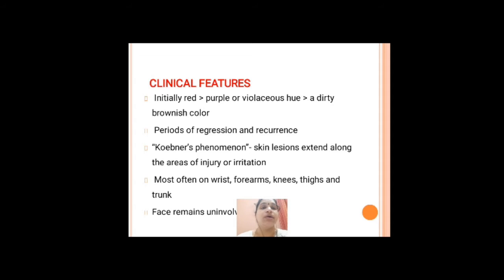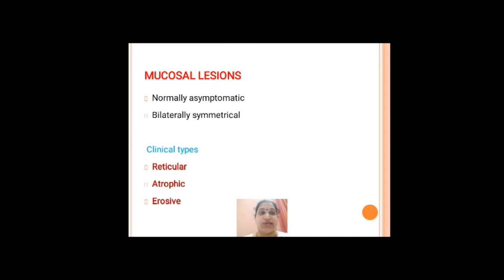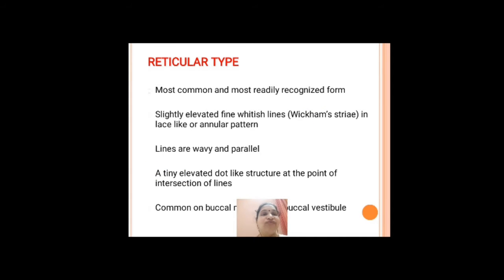The Koebner phenomenon means that areas of irritation or injury will lead to the development of lichen planus-like lesions upon that area. Oral mucosal lesions will also be bilaterally symmetrical. There are several types: reticular, atrophic, erosive, and others. Of these, the reticular type of oral lichen planus is very common.